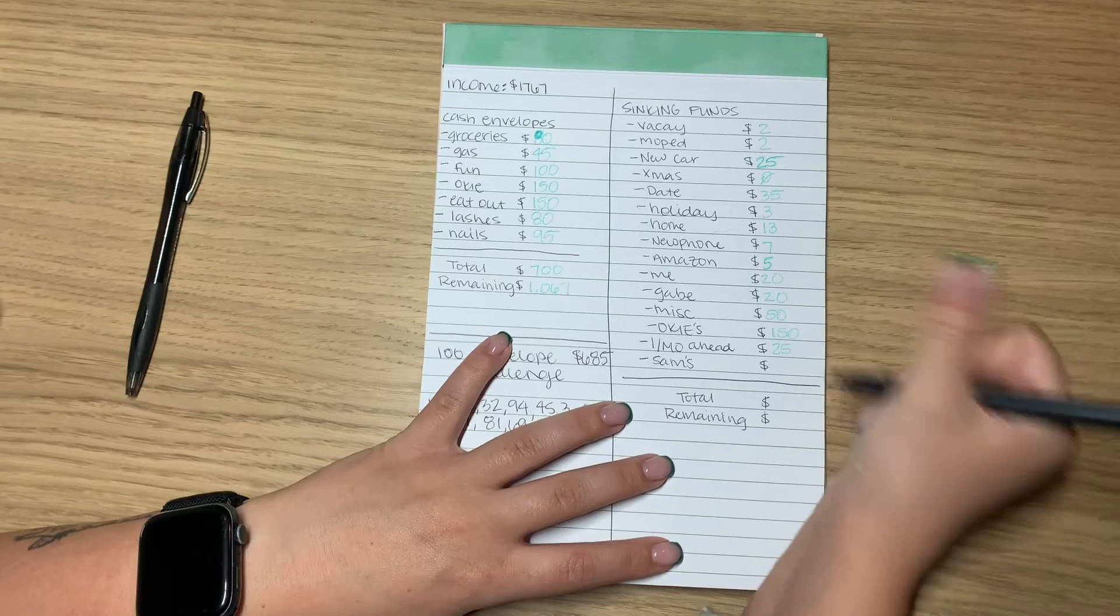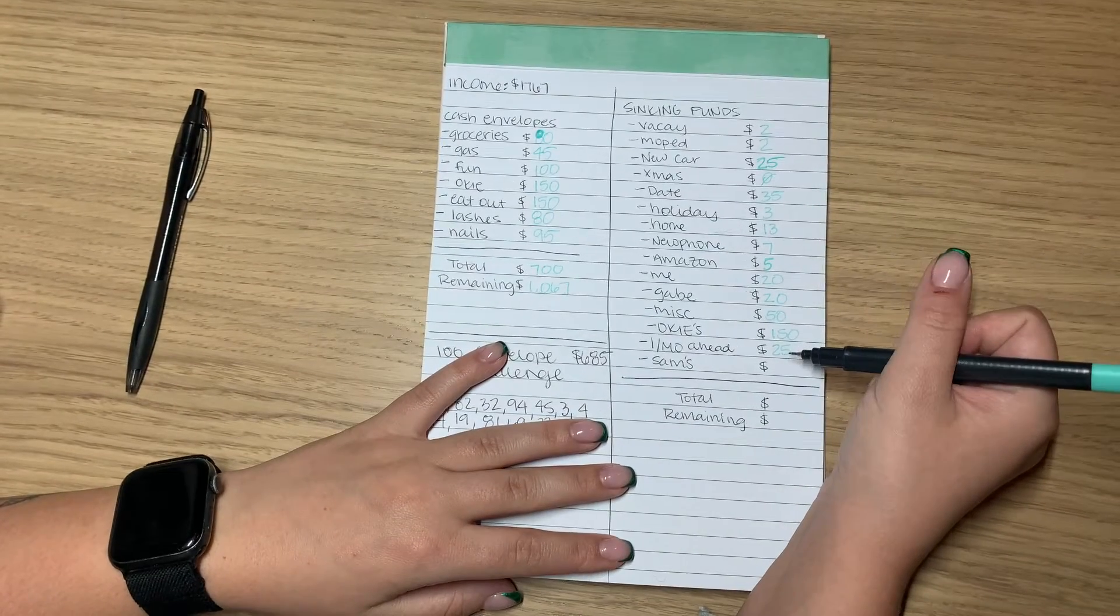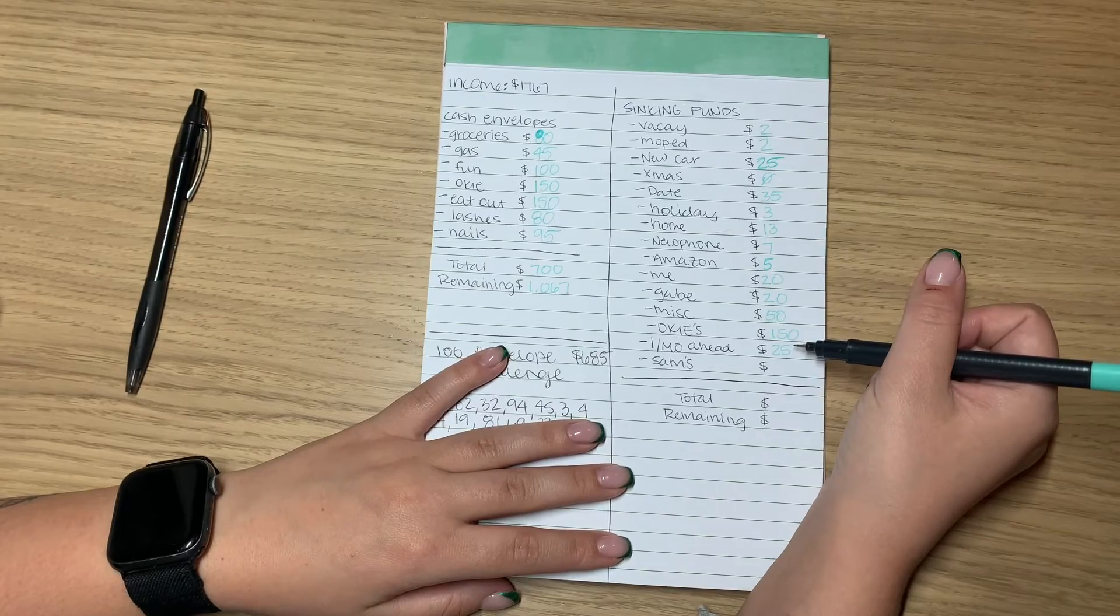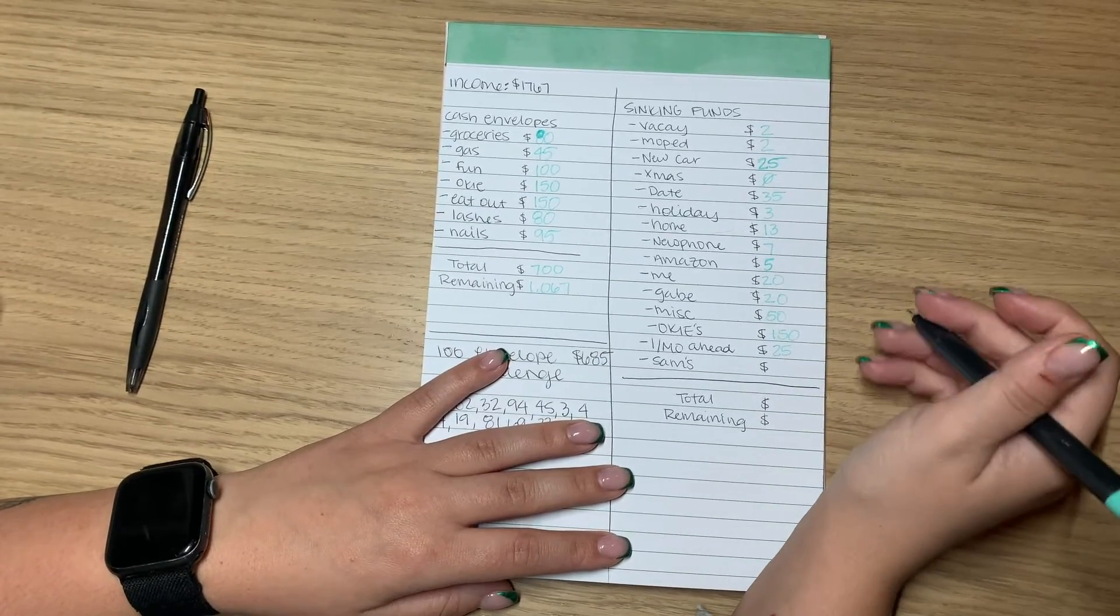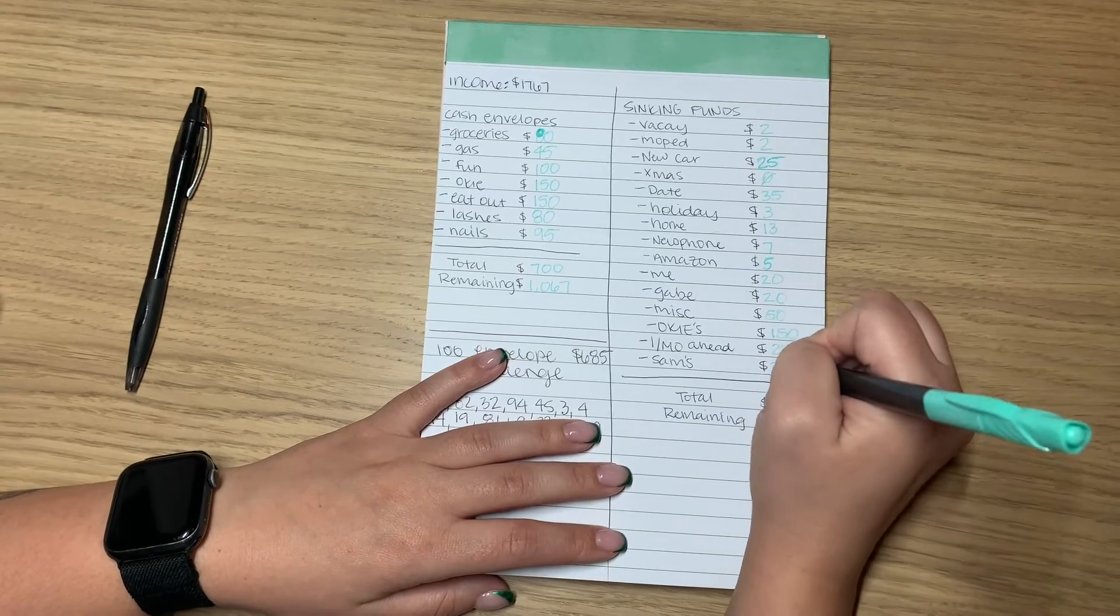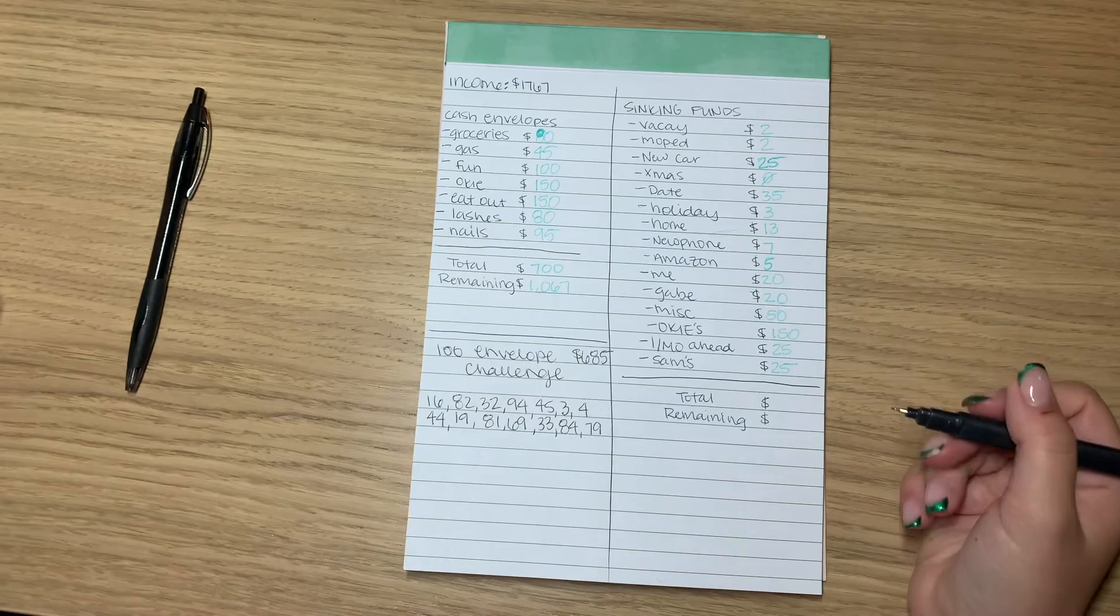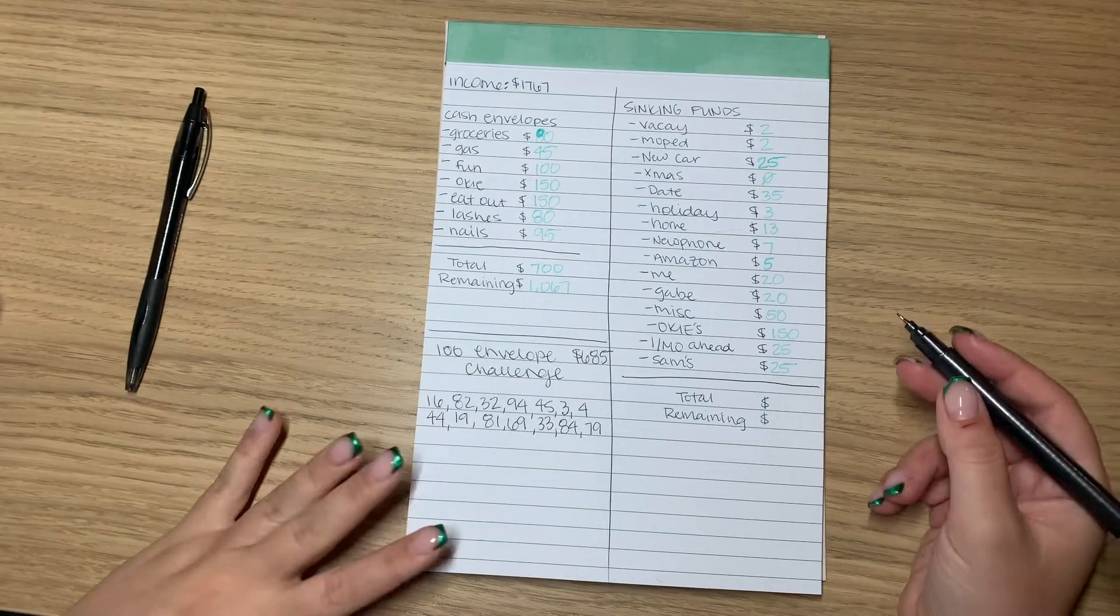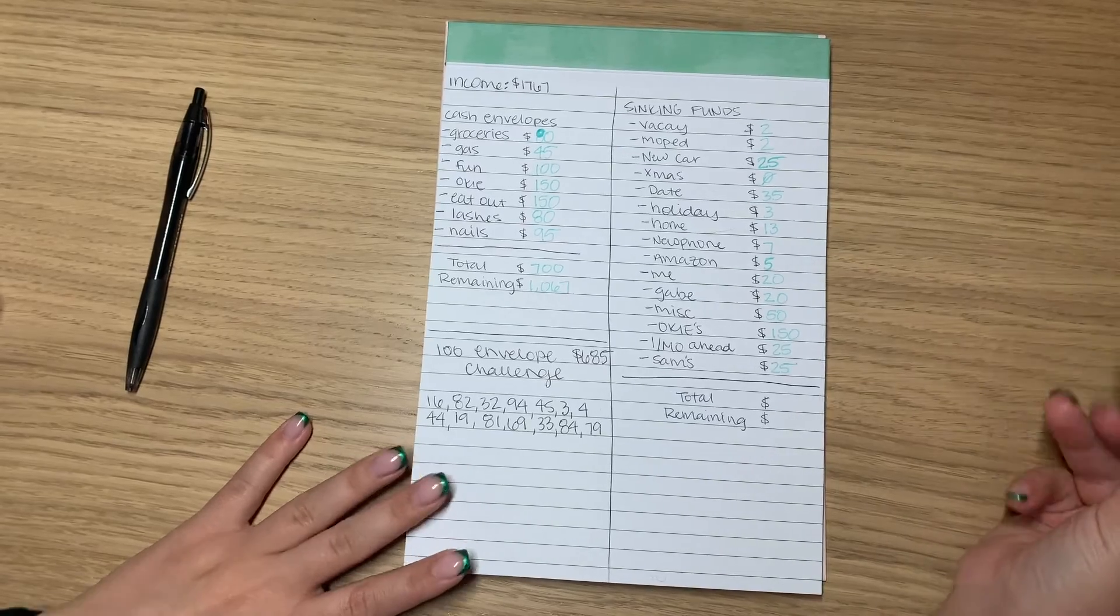$25 for one month ahead. I'm just going to slowly build this up. I did figure out all my expenses and I need like, I think $1,800. So we've got a long way to go, but Sam's $25. We're just going to build this up and go buy bulk, like frozen meat and stuff like that. But anyway, all of this added together is $382.